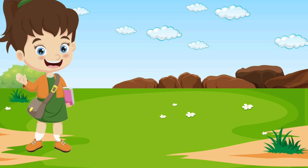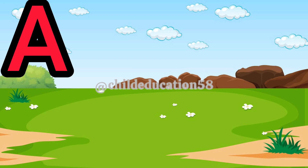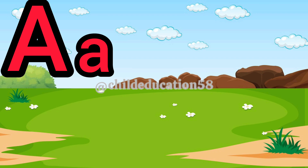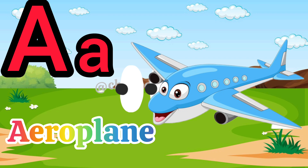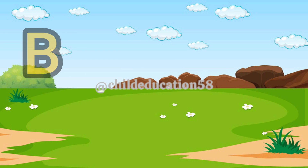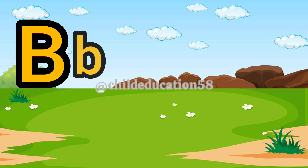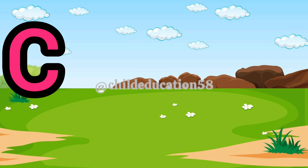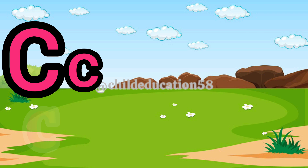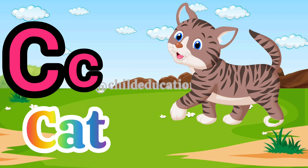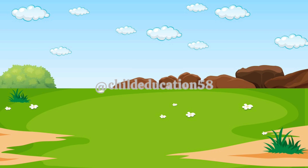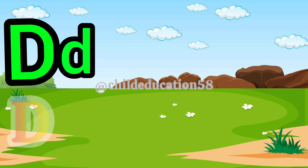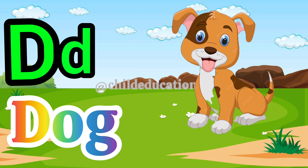Hello friends, let's learn A B C D. Capital A, small a, A for aeroplane. Capital B, small b, B for baby. Capital C, small c, C for cat. Capital D, small d, D for dog.